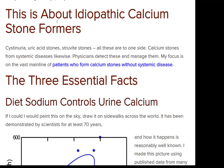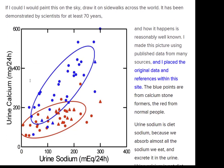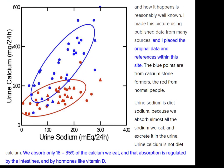If you are an idiopathic calcium stone former — meaning you have calcium stones without a systemic disease — the most important thing to begin with is the effect of sodium on calcium. This graph, made from published data, shows urine sodium (what you ate) on one axis and urine calcium (what you lose in the urine) on the other. These are normal people: urine calcium goes up as they eat more sodium. These are stone formers — look at the difference. The slope is higher; if you're a stone former, your urine calcium goes up much more as your diet sodium goes up.